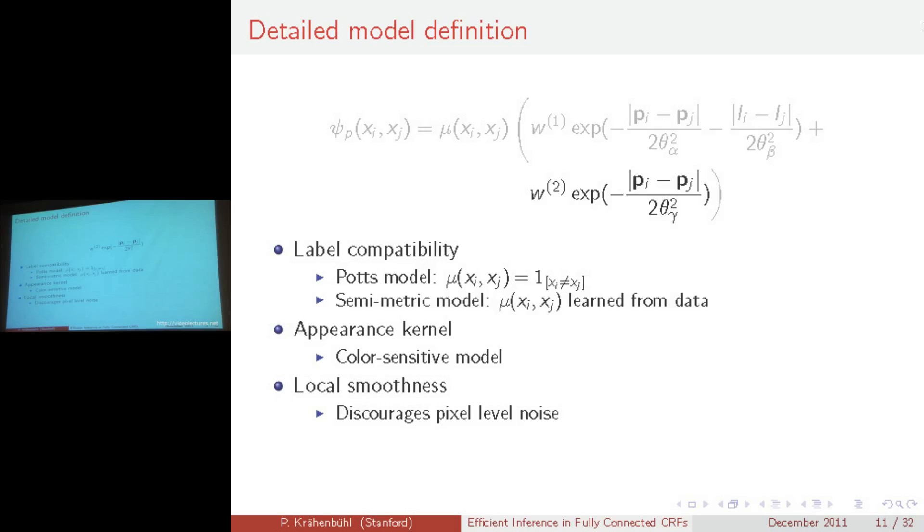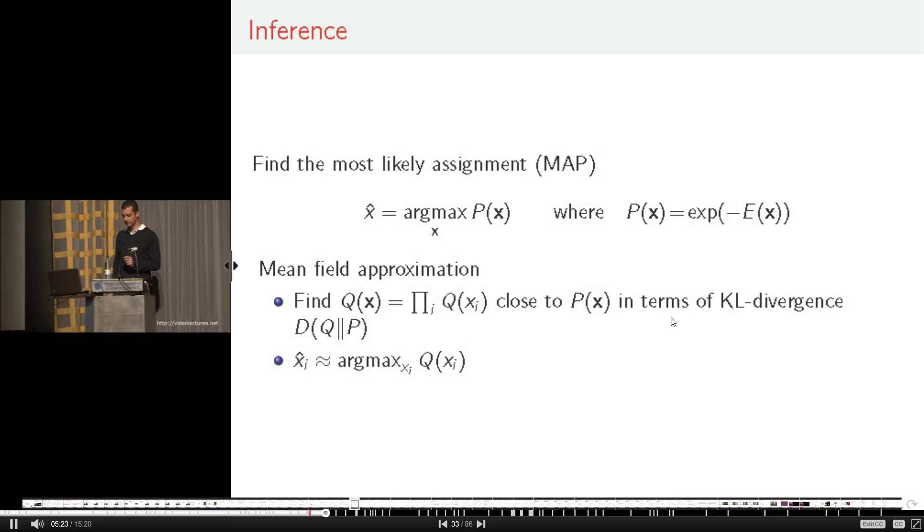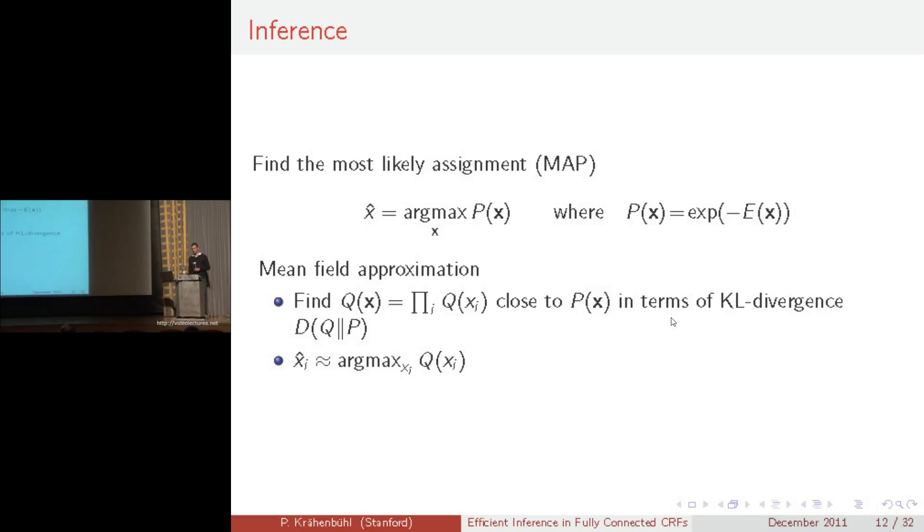Now that we've defined our model, what we want to do is find the most likely assignment or the most likely labeling under that model. We do this using a mean field approximation, where the mean field approximation finds a simple probability distribution Q, which is a product of independent marginals, and it finds Q such that it is as close as possible to P in terms of the KL divergence. Once we've found Q, we can approximate the maximum a posteriori simply by taking the maximum of each of the independent marginals.